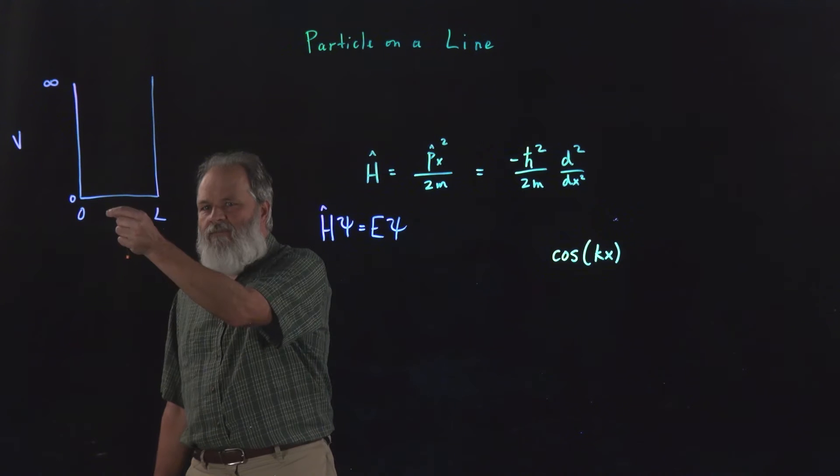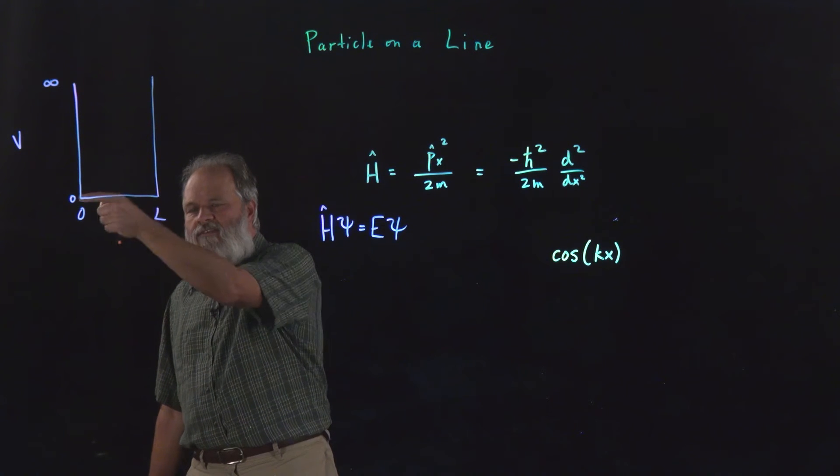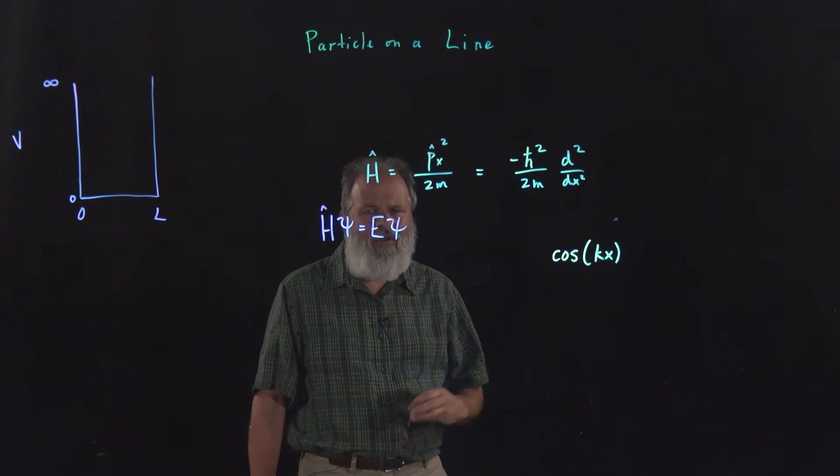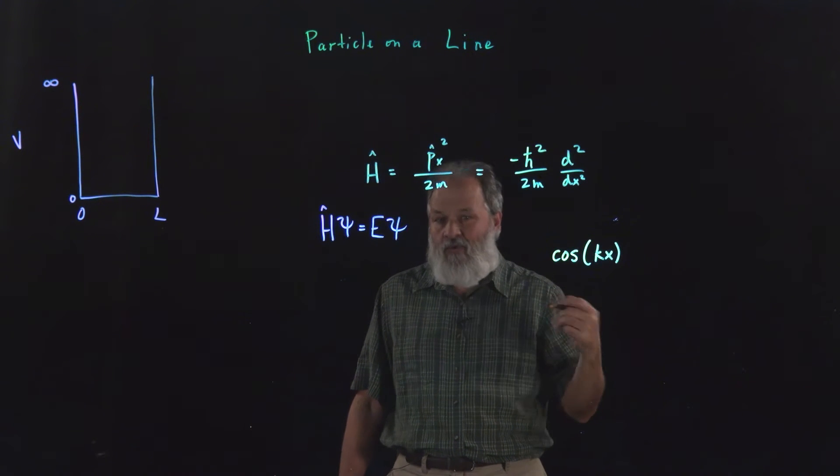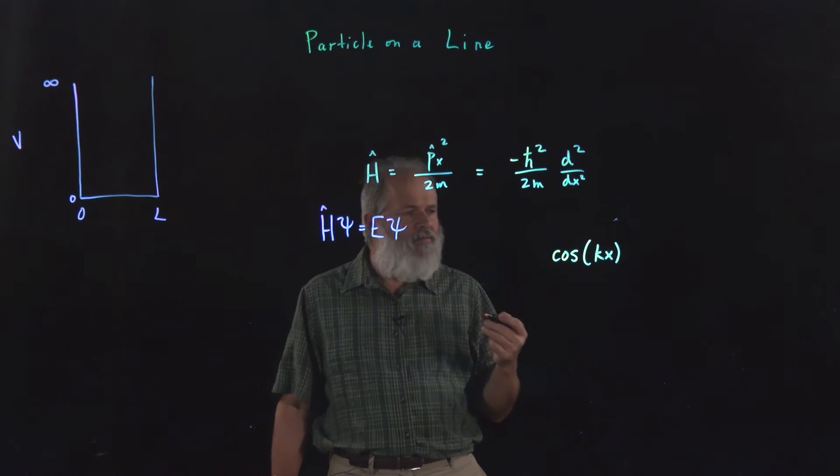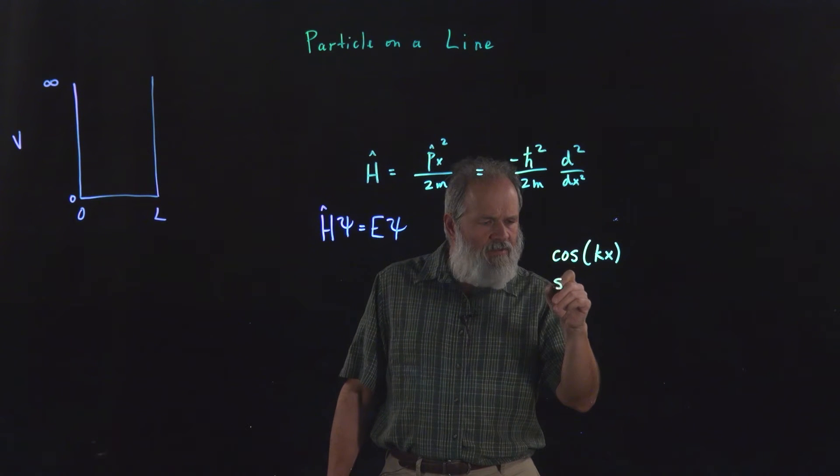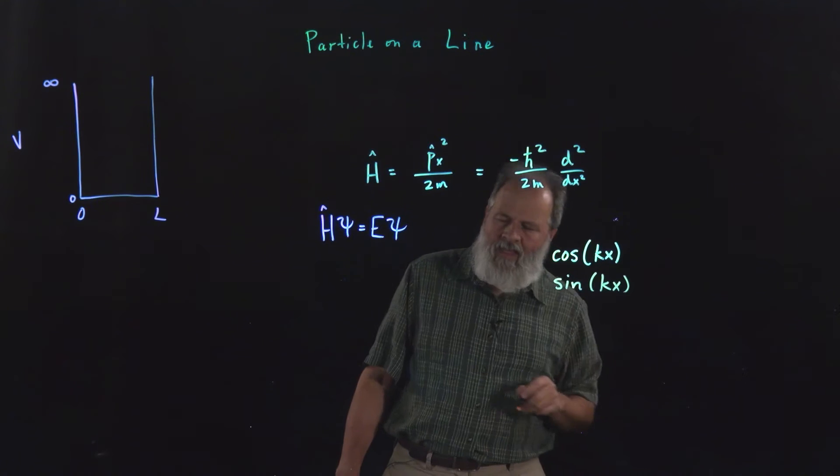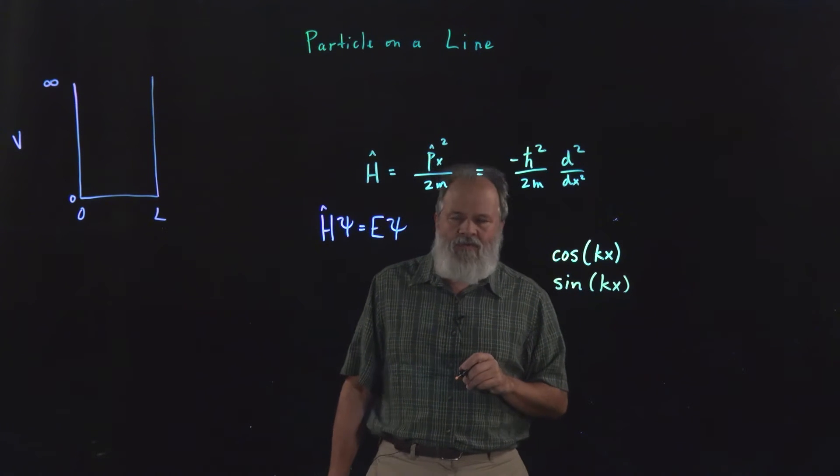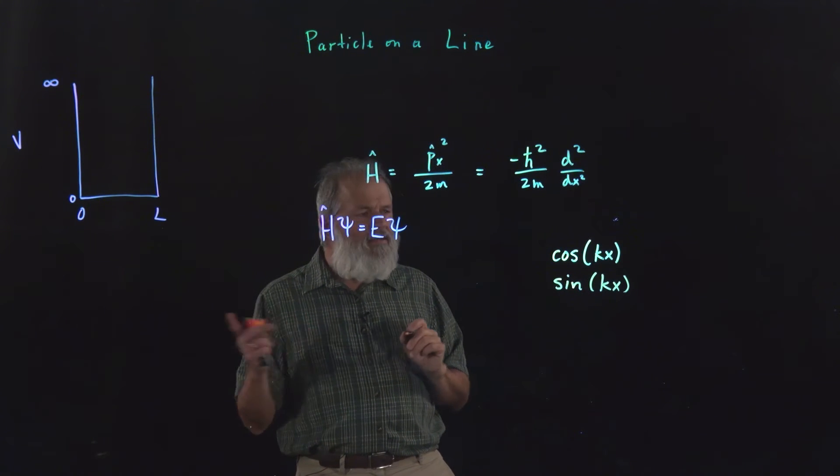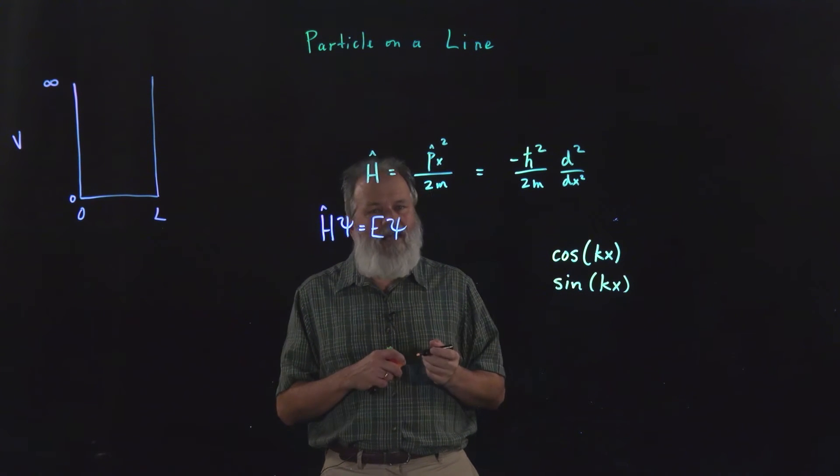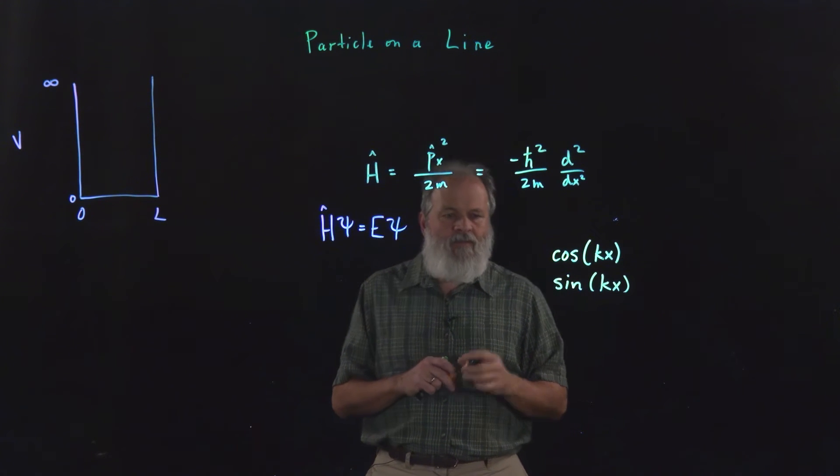Sometimes the particle might be moving from L to zero and sometimes it might be moving from zero to L, but we don't know which. But k squared is going to be the same for both. Also, sine of kx is also going to obey the fact that the second derivative is going to be minus k squared times the original.